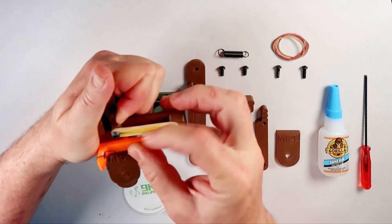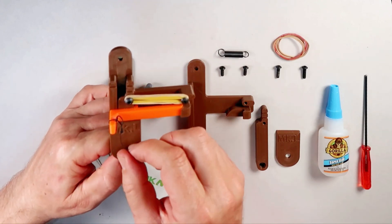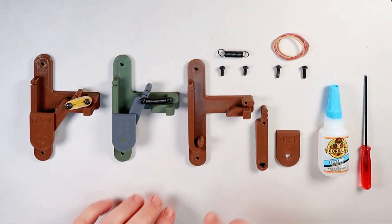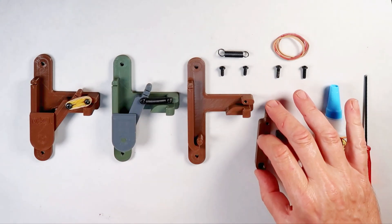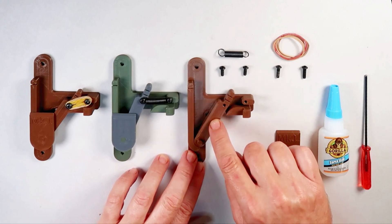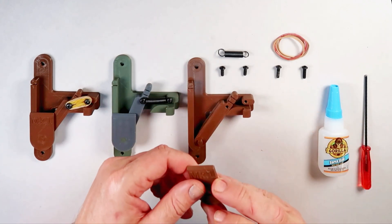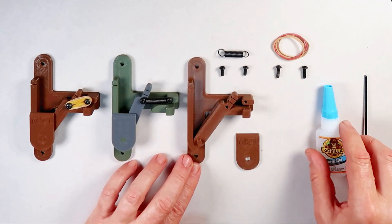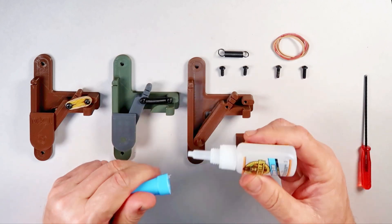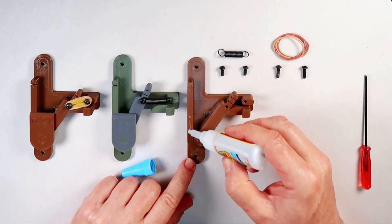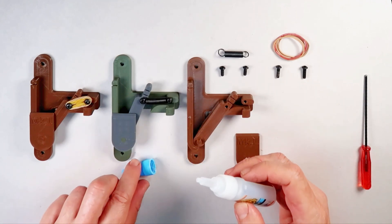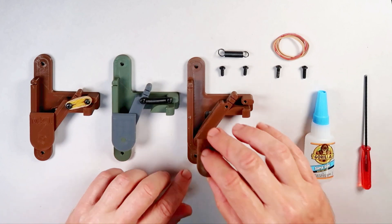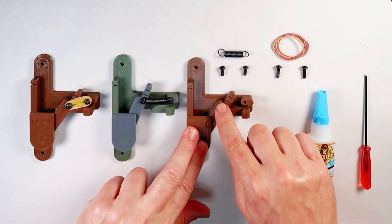To assemble, place the lever arm onto the body. Secure the lever arm with CA glue. Ensure the arm can move freely.